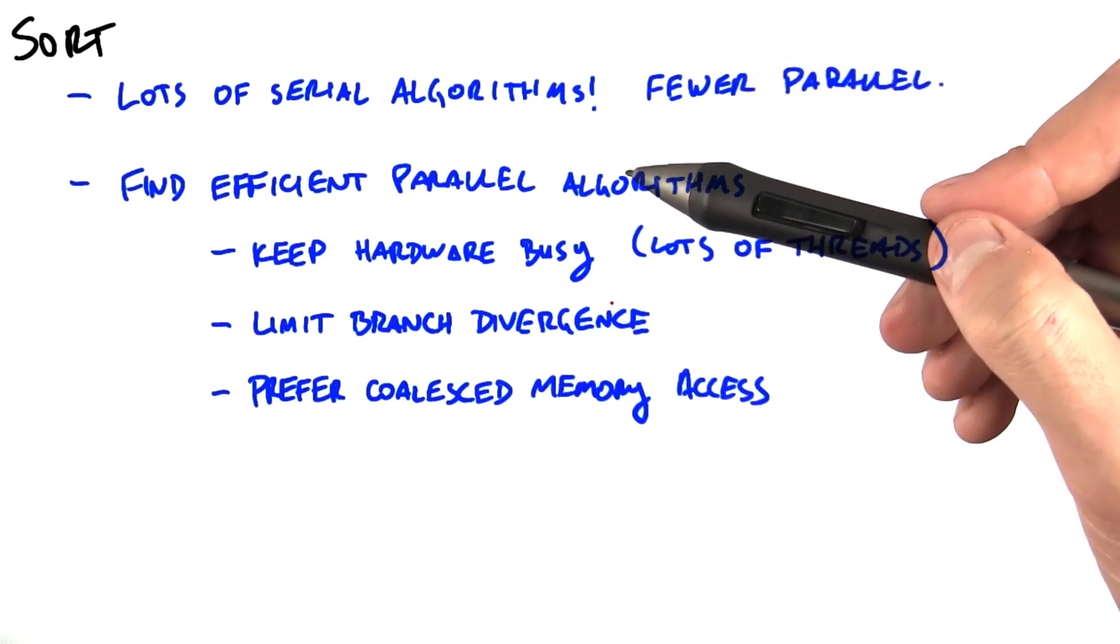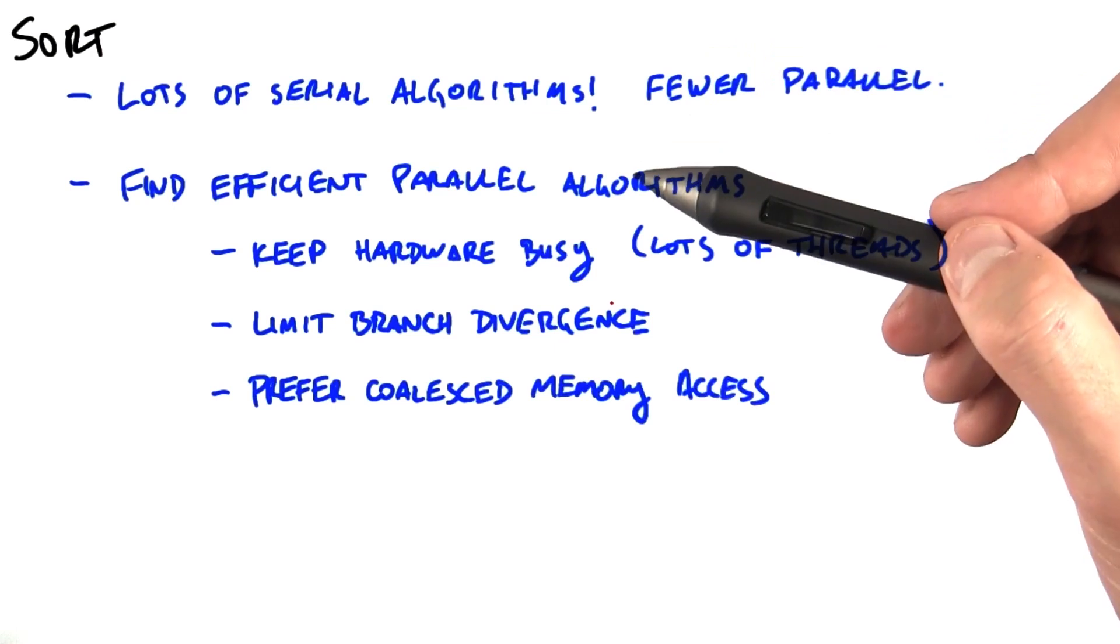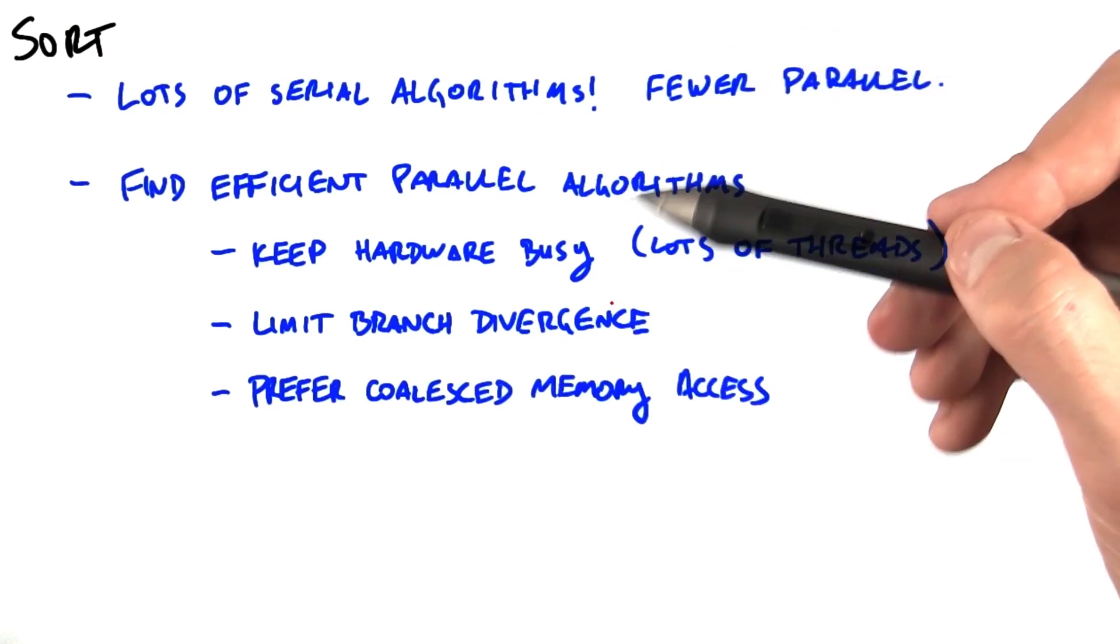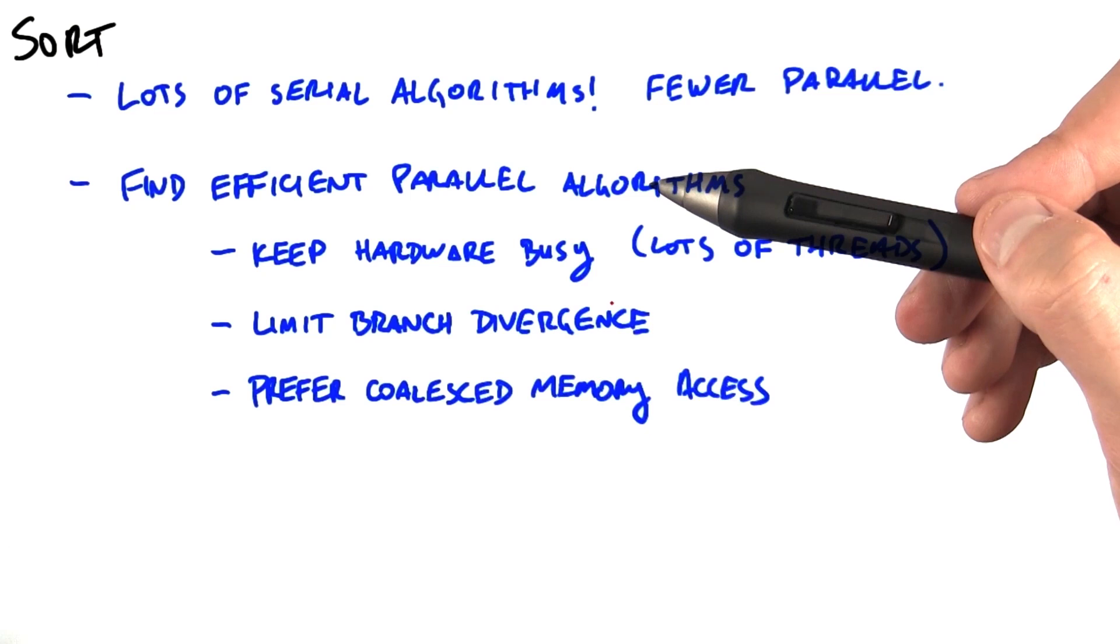So the sort of algorithms that you might have learned in an algorithm course tend to be moving around little bits of memory at a time, and they have very branchy code, and they're not often very parallel.